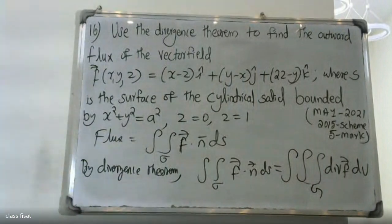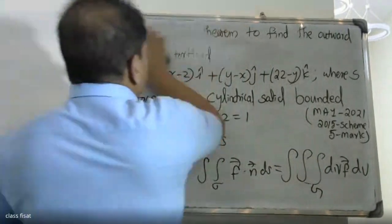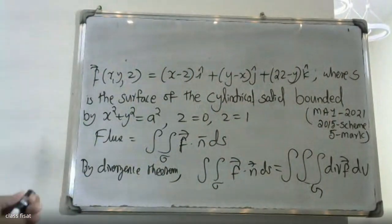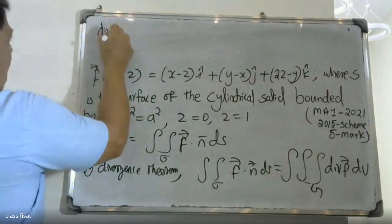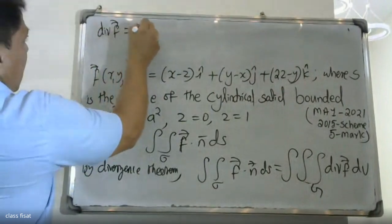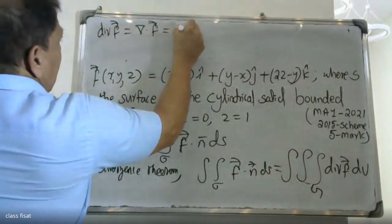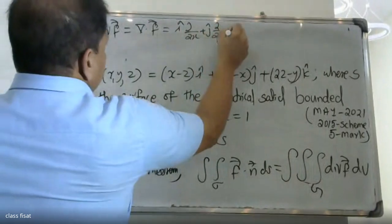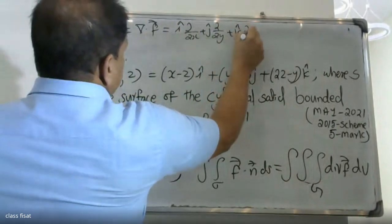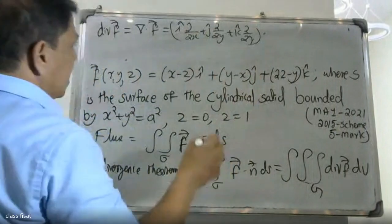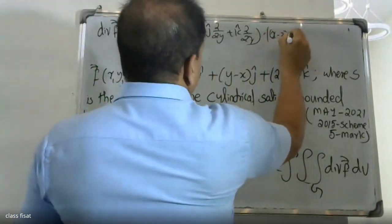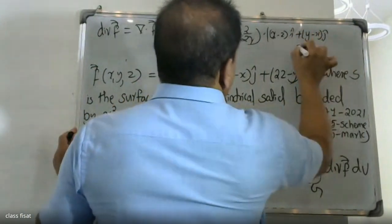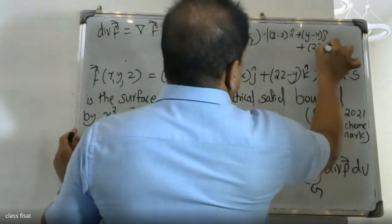First we have to find the divergence. Del dot F equals (del/dx)i plus (del/dy)j plus (del/dz)k, dotted with the vector field (x minus y) i plus (y minus x) j plus (2z minus y) k.